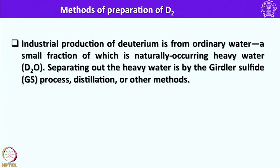Let me discuss the method of preparation of deuterium or deuterium compounds such as D2O, also called heavy water. Industrial production of deuterium is from ordinary water — the ocean consists of 99.9% H2O and 0.02% D2O. Separating heavy water from ocean water is carried out by two methods: the Girdler sulfide process and distillation, and a few other methods have also been employed.